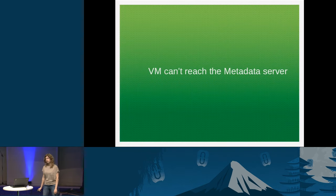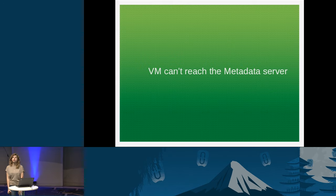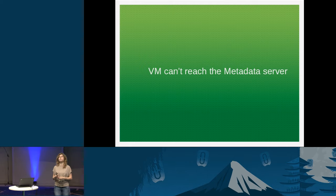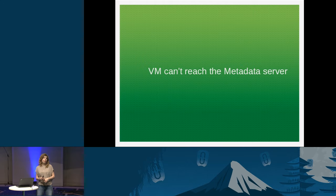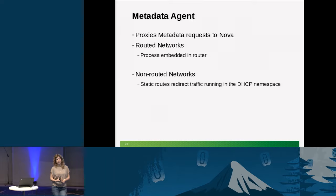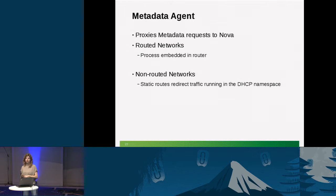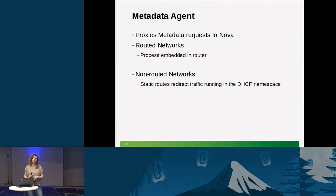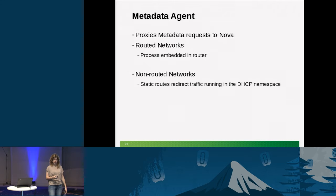Another common issue: the VM can't reach the metadata server. The metadata server serves metadata for the VM — for example, SSH keys. In Neutron, the metadata agent proxies requests from the VM to the Nova metadata server. There are two configurations: routed networks (when the network is connected to a router) and non-routed/isolated networks (when the network is isolated with no router).